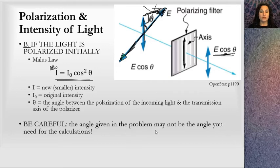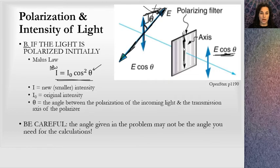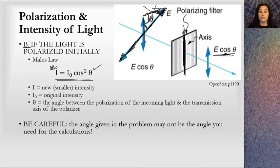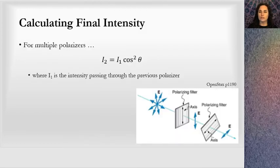Be careful — the angle given in a problem may not be the angle you actually want to use. They might give some other angle. Make sure you very specifically locate the angle between the electric field and the transmission axis. This is called Malus's Law, and I'll do problems in another lesson where I'm very particular about drawing and identifying that angle correctly.